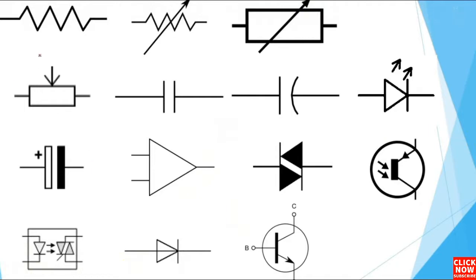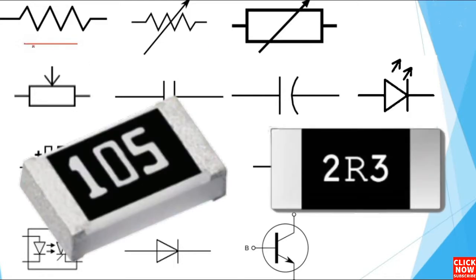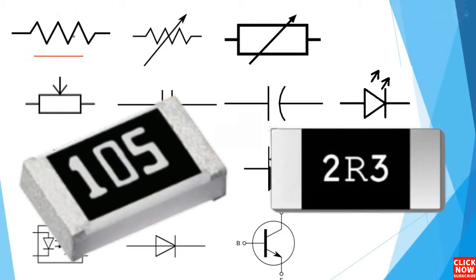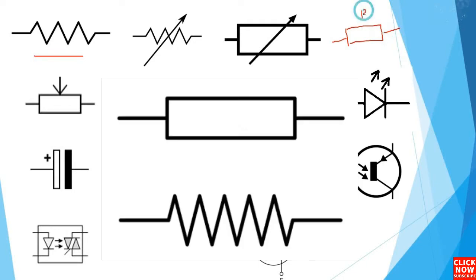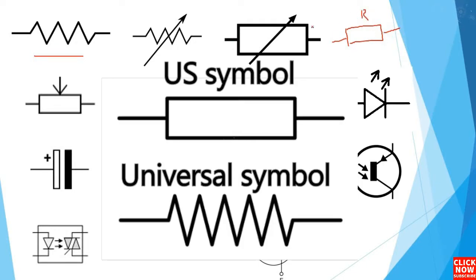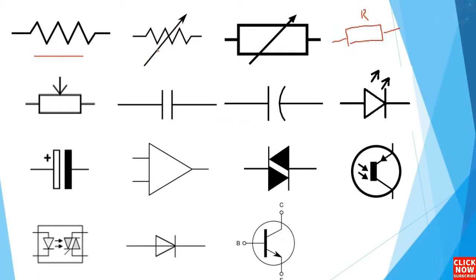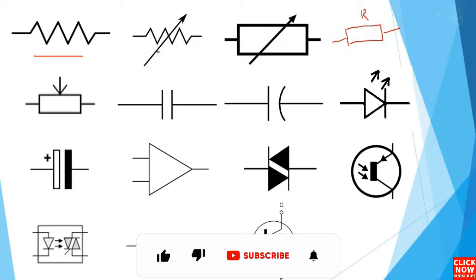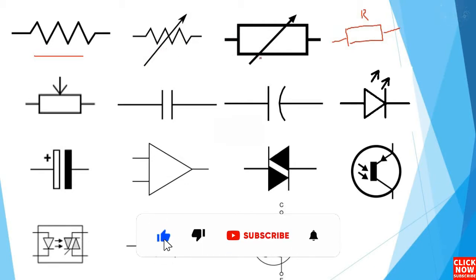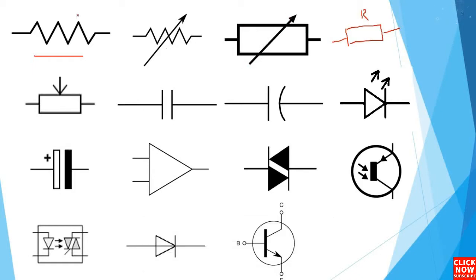As you can see, we have many samples that we're going to cover. The first sample is the resistor. Here we have another sample for the resistor, but this is basically a US resistor. Here this is a variable resistor — the symbol of a resistor plus the arrow in the middle means variable resistor. This also is a variable resistor. The reference for the resistor is always R.